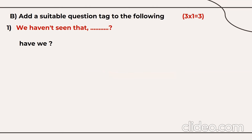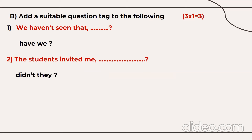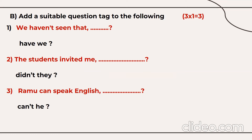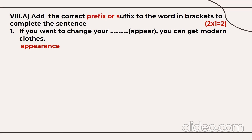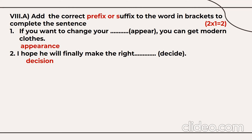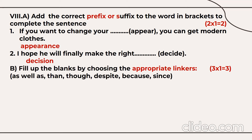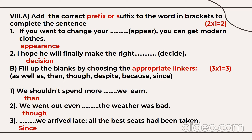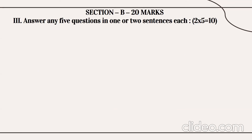For question tags: 'We haven't seen that, have we?' — negative statement takes a positive tag. 'The students invited me, didn't they?' — past tense uses 'did not.' 'Ramu can speak English, can't he?' For prefix or suffix: 'appear' becomes 'appearance'; 'decide' becomes 'decision.' For linkers: 'We should not spend more than we earn.' 'We went out even though the weather was bad.' 'Since we arrived late, all the best seats had been taken.' These complete the 40-mark workbook section.